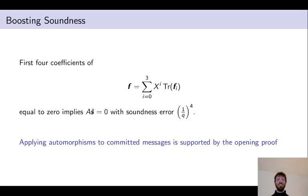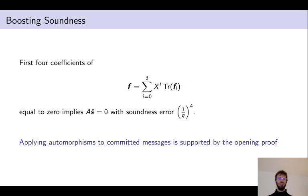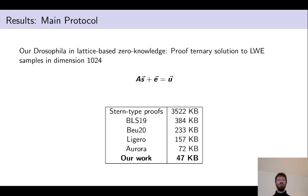The question is how to arrive at a commitment to this more complicated polynomial F. Fortunately, the opening proof we use internally already supports applying automorphisms to commitments, so we can apply automorphisms and still prove things about the message. This allows us to implement the approach and let the verifier compute a commitment to the new polynomial F using the automorphisms.